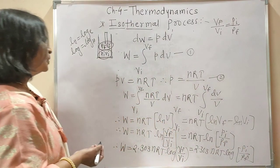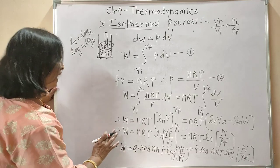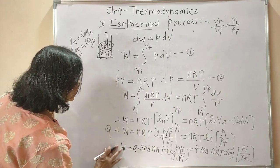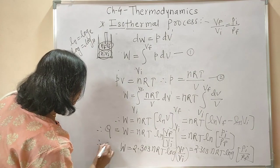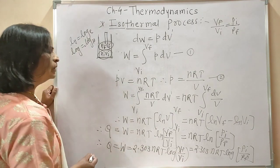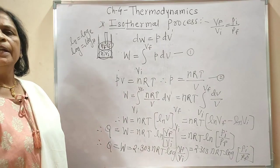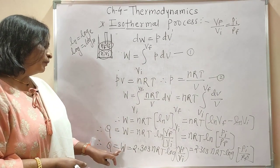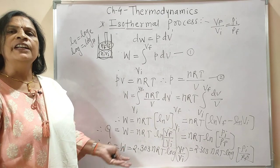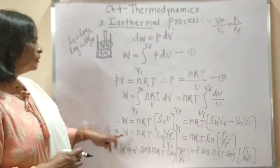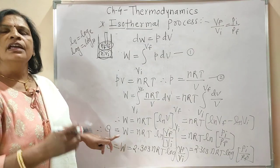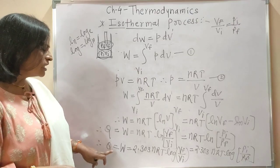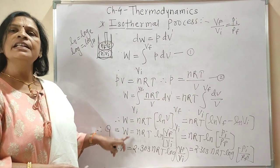And Q is equal to W. Heat supplied to the system is used to perform work done. If heat is absorbed by the system, work done is positive. If heat is lost by the system, work done is negative.